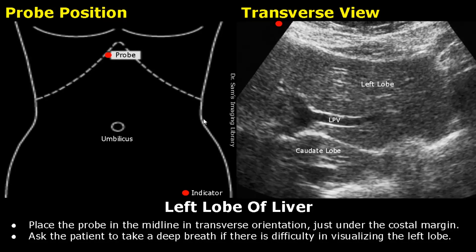The probe is placed in the midline in transverse orientation, just below the costal margin, and you will see the left lobe in transverse view. This is the left lobe and we can also see the left portal vein. It has a hyperechoic wall.